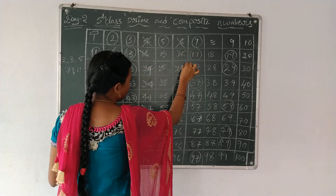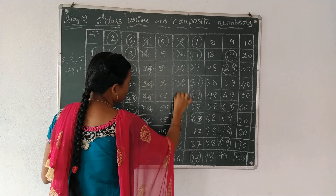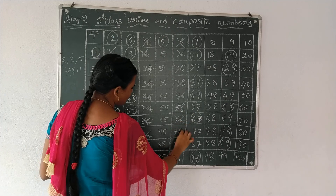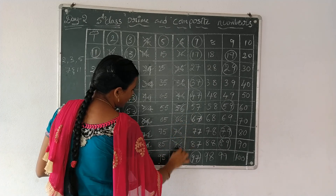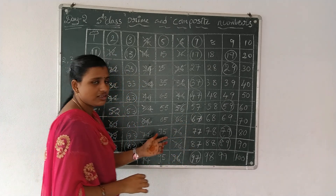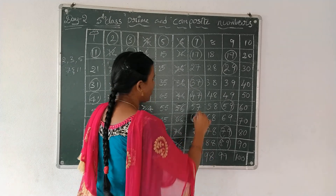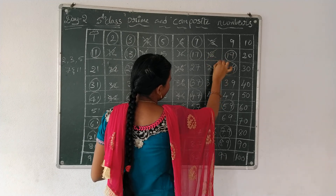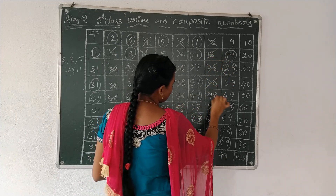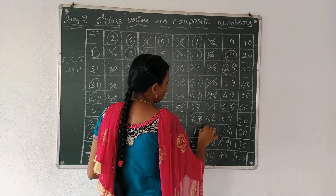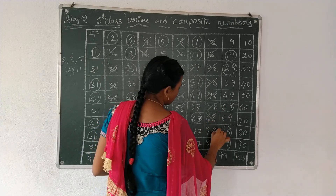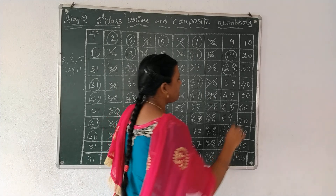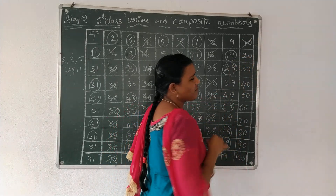Continue with: 16, 26, 36, 46, 56, 66, 76, 86, 96. These are all even numbers. Also 8 series: 18, 28, 38, 48, 58, 68, 78, 88, 98.